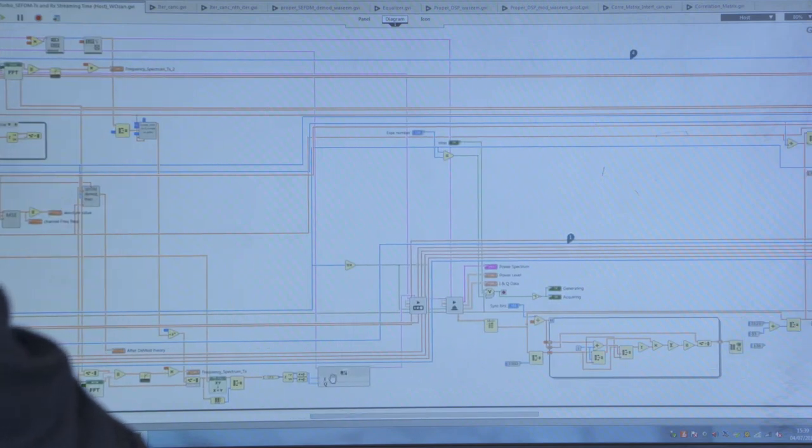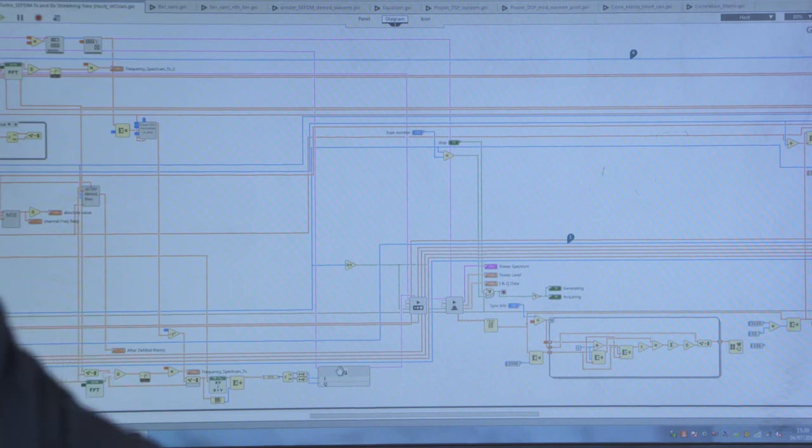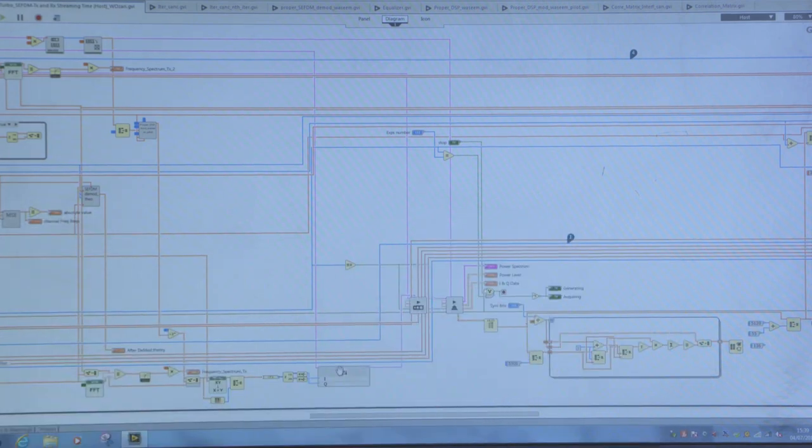These signals go into the FPGA and the USRP to be transmitted as RF realistic signals.